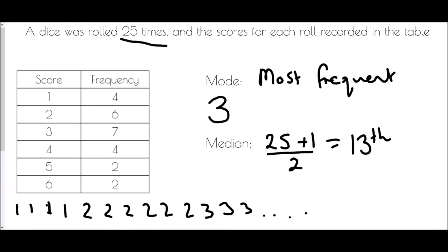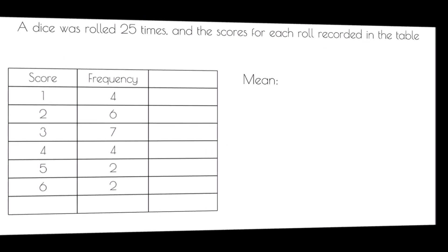We keep a running total going down the frequency column. We already have four results; adding the twos gives us 10 values; adding the threes brings us to 17. That means the 13th value must be in this group, because 13 is past the 10th but before the 17th. So just like with the mode, we look for the score associated with that group — the median is also three.